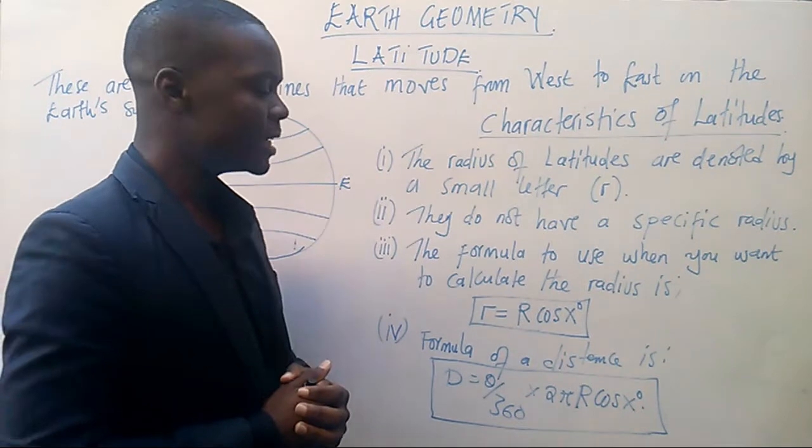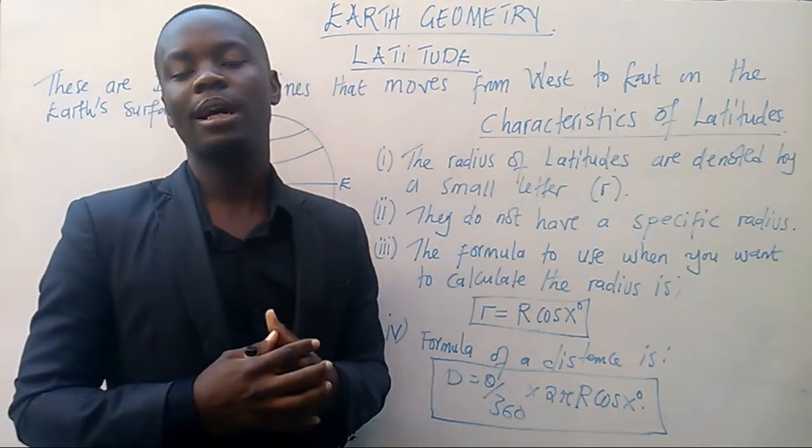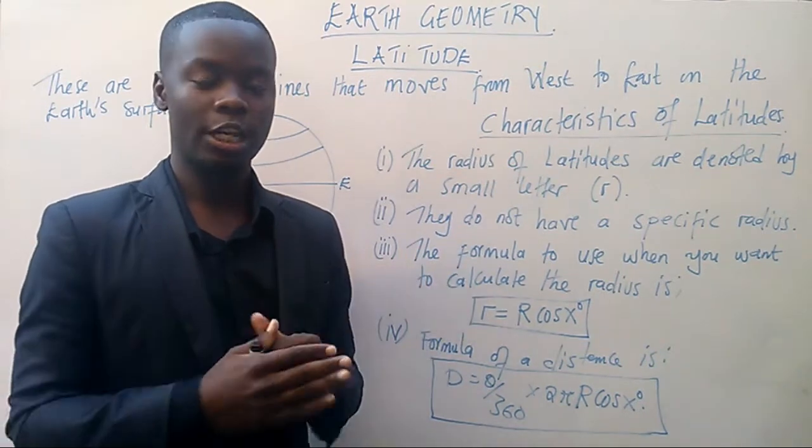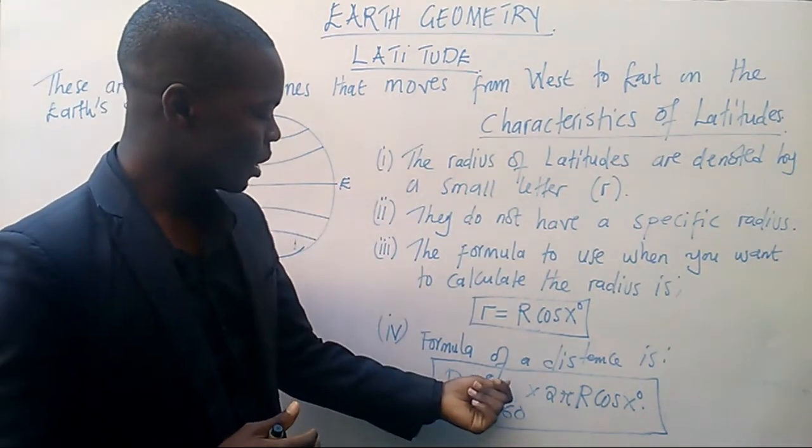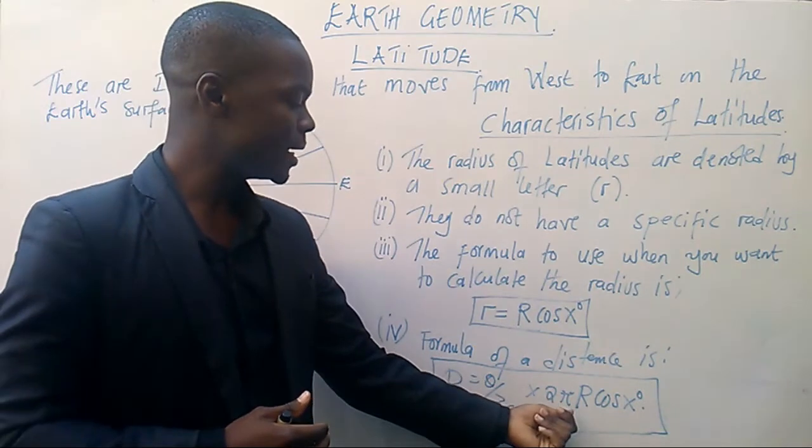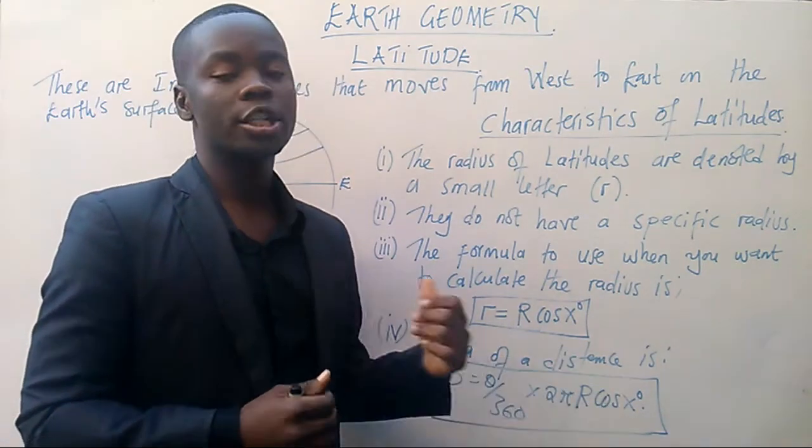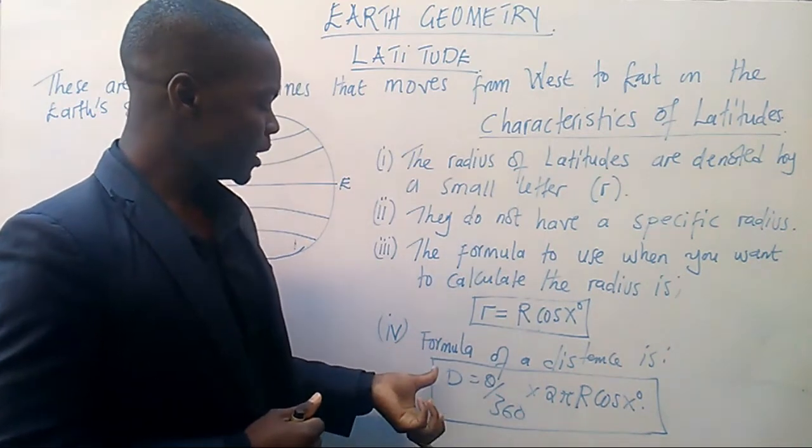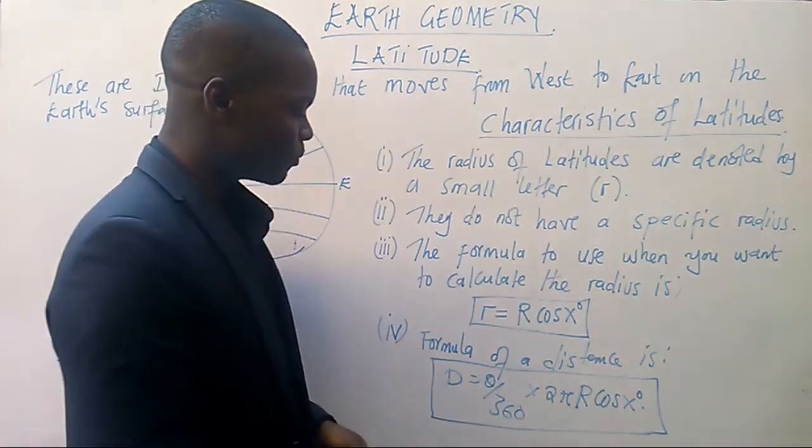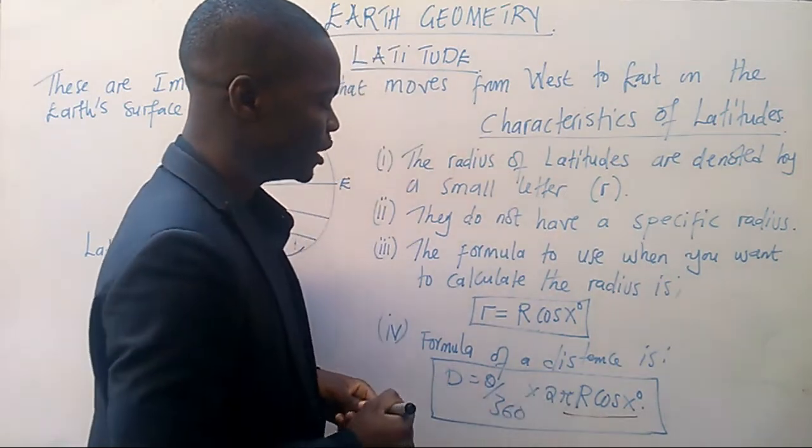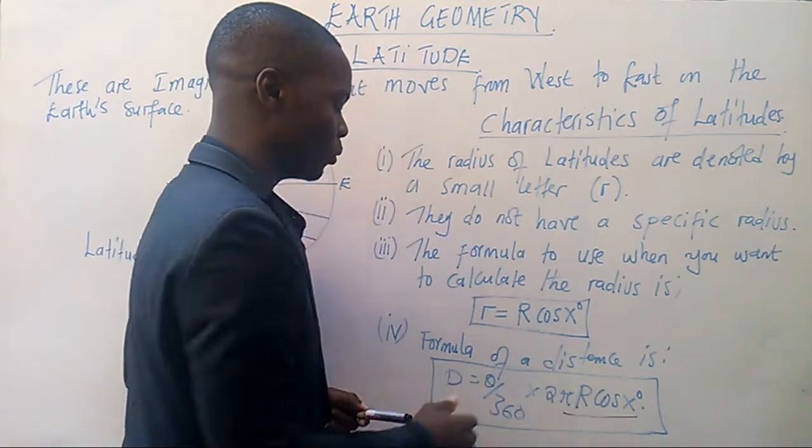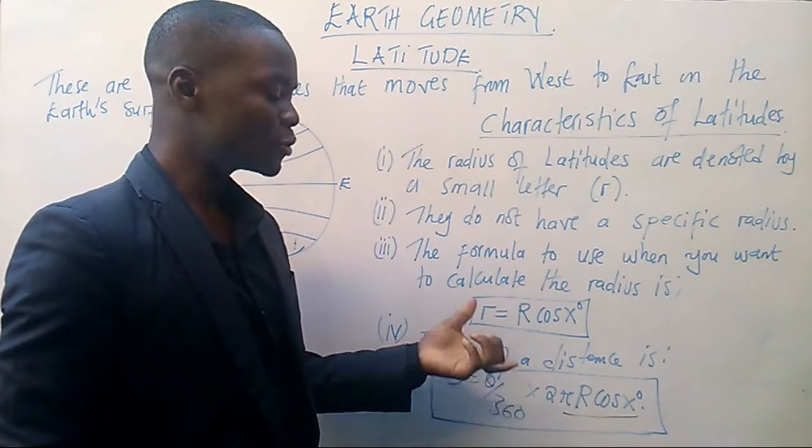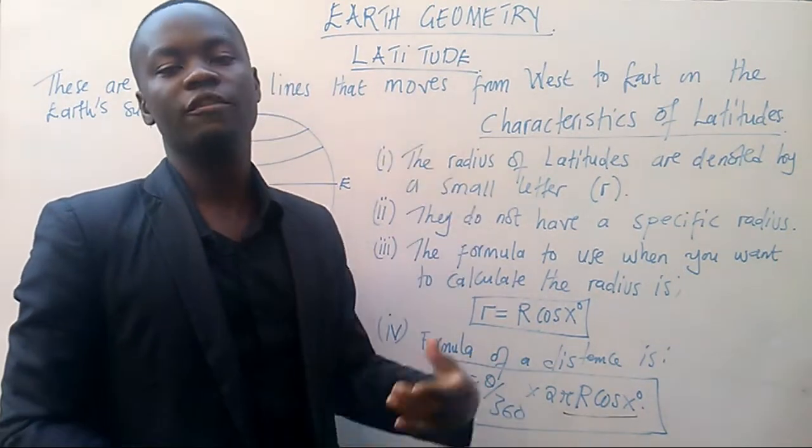Then, the last characteristic is just a formula, the distance formula, which you can use to calculate the distance along the latitude. The distance is d equals theta over 360 times 2 pi capital letter R cos x degrees. On the third video, I'm going to explain where this concept is coming from. Why are we not having small letter r, but we are having a capital letter R?